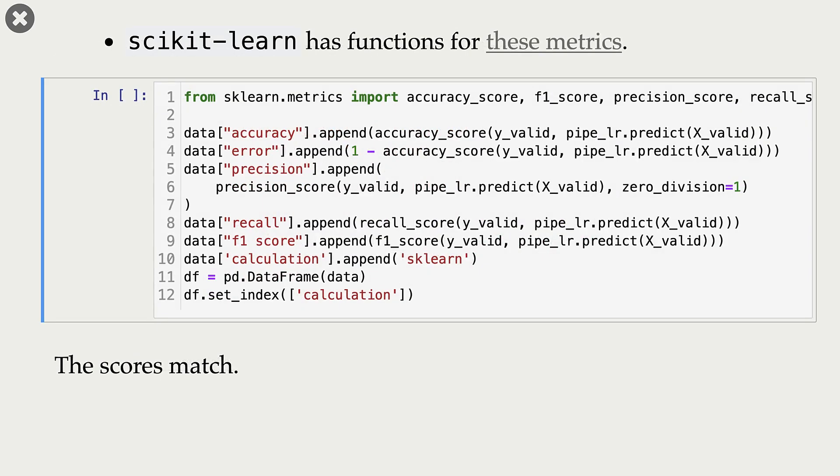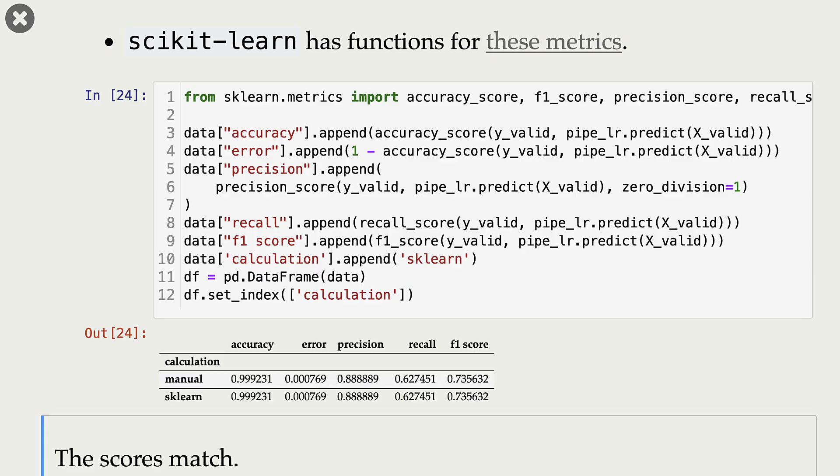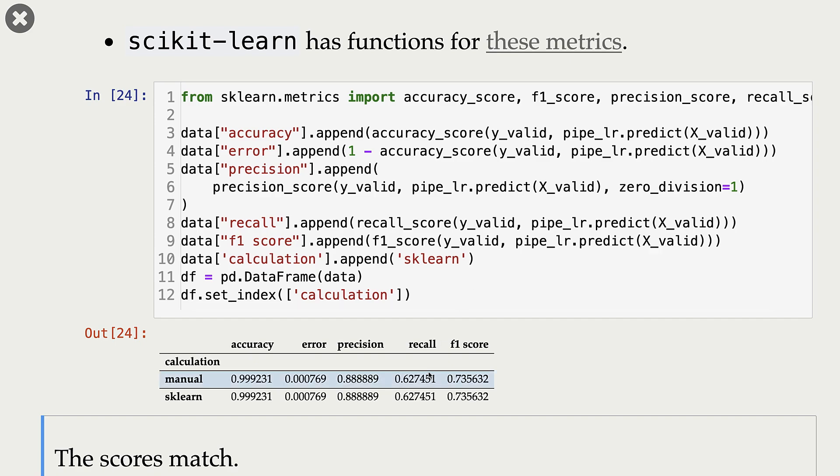In the previous slides, we calculated precision, recall, and F1 score on our own. Now, scikit-learn also has functions to calculate these metrics. You can import them from sklearn.metrics. And here, I'm calculating all these metrics. As we can see here, the scores calculated by us and scores given by scikit-learn, they match.